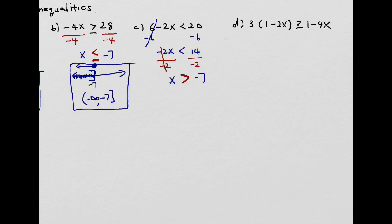You got the same answer as the other one, but the inequality sign is different. So if negative 7 is here on the number line, x is greater than negative 7 — greater means the right side. There's no equal sign, so use an open circle or parentheses, which means the value is not included. The interval notation is negative 7 with parenthesis to positive infinity.